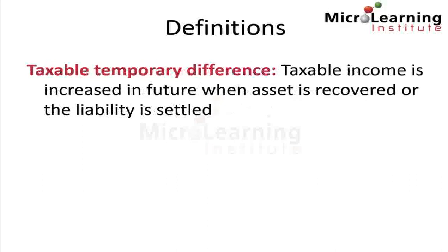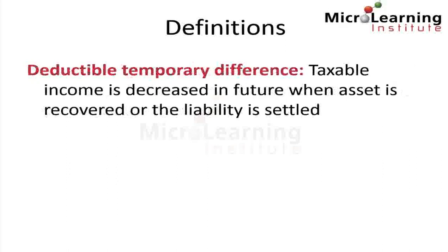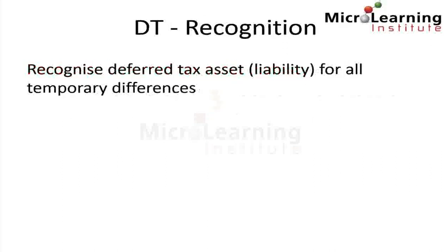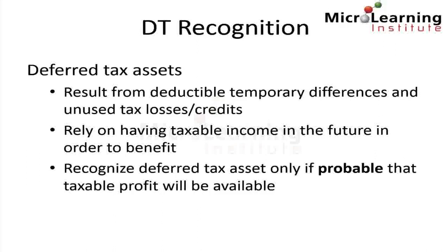A taxable temporary difference occurs when taxable income is increased in future when the asset is recovered or the liability is settled. A deferred tax asset or liability is recognized for all temporary differences. A deferred tax asset is recognized as a result from deductible temporary differences and unused tax losses or credits. The recognition of a deferred tax asset relies on having taxable income in the future, and we recognize a deferred tax asset only if it is probable that taxable profit will be available in future periods.